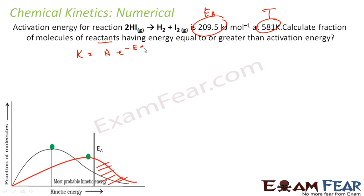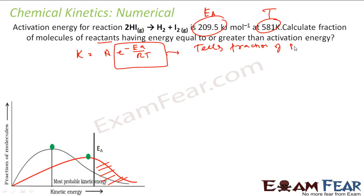We'll use the Arrhenius formula: K equals A times e to the power minus Ea by RT. Arrhenius said this exponential part, e to the power minus Ea by RT, represents the fraction of molecules whose kinetic energy is greater than the activation energy. This part has no units — it is just a mathematical number that gives you the fraction.